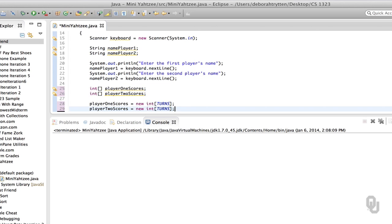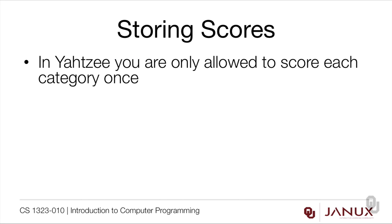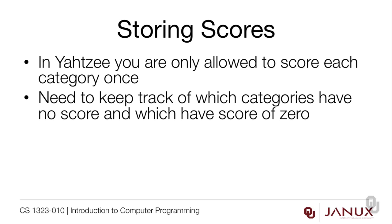The dice array is a little different because it's going to show up somewhere else in the program, so we'll have to think through where that belongs later. We also need to think about how we're going to store the scores. In Yahtzee you're only allowed to score each category one time, so there's a difference between having a score of zero and not having scored the category at all — a zero score means that category can't be rescored later.